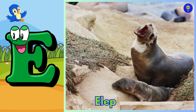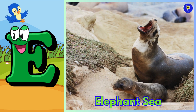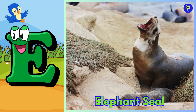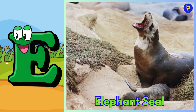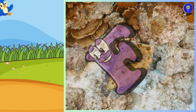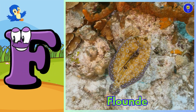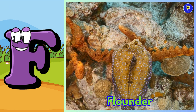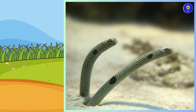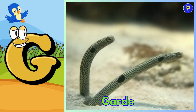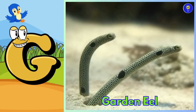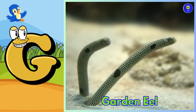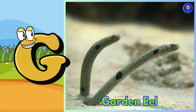E is for elephant seal, eh, elephant seal. F is for flounder, fuh, flounder. G is for garden eel, guh, garden eel.